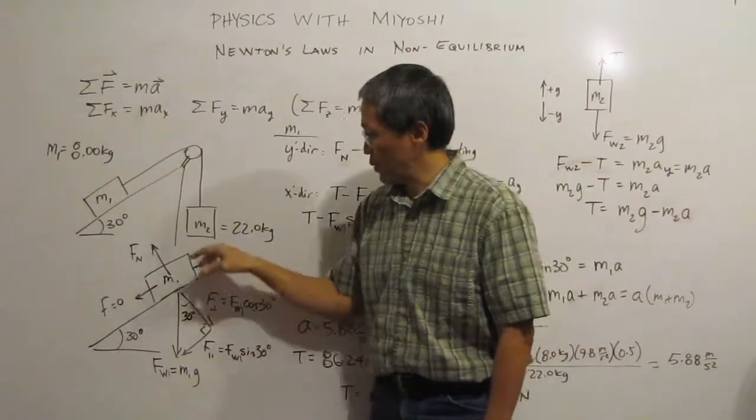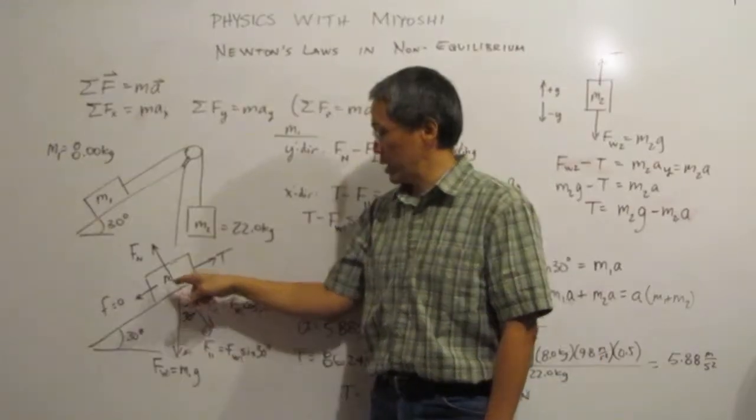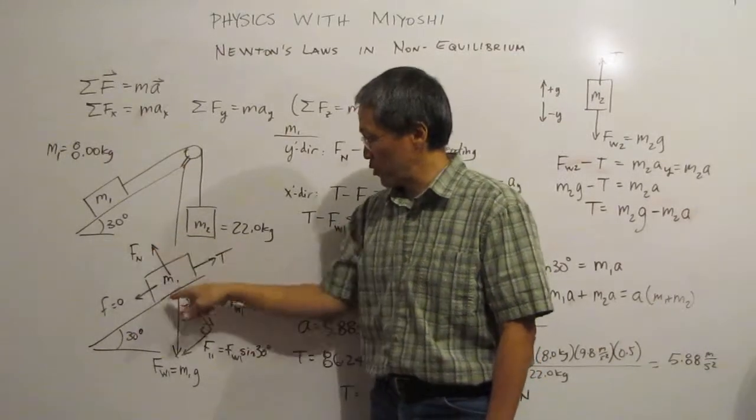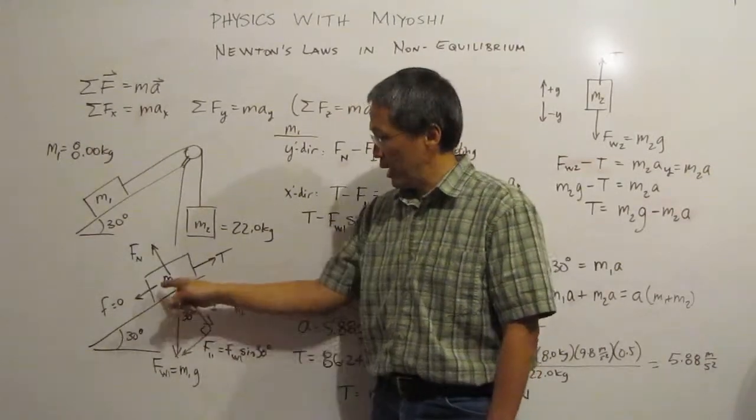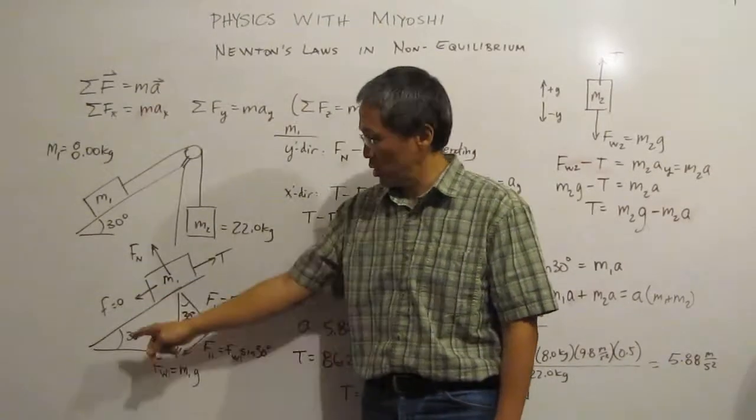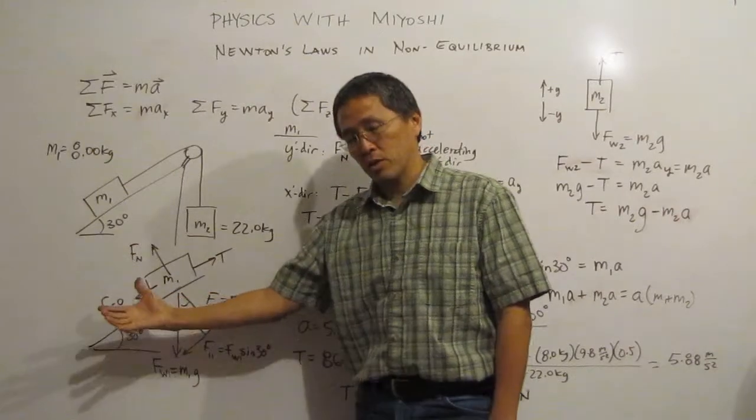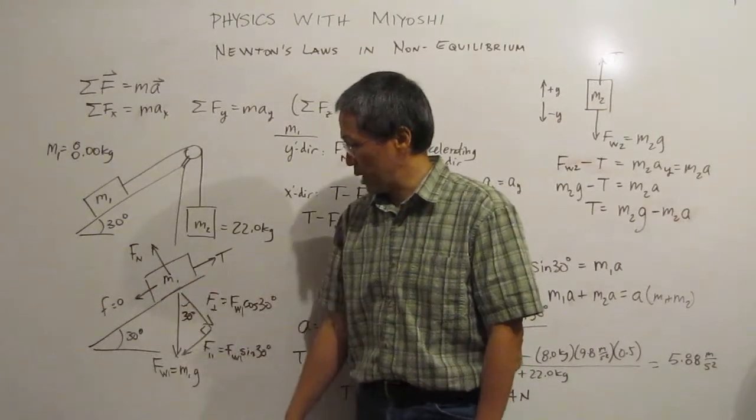So when we draw the free body diagram for mass 1, we can see that the only forces acting on our tension force, our normal force from the surface itself and then the weight acting straight down. I did put in this little F is zero. That would be for a friction force, noting that this guy is frictionless, which doesn't happen or at least not too close to, we can get close to frictionless, but not quite frictionless here on earth.